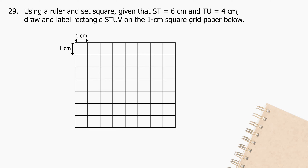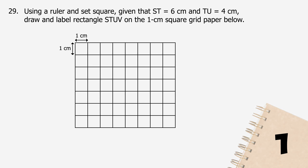Question 29: Using a ruler and set square, given that ST equals 6 cm and TU equals 4 cm, draw and label rectangle STUV on the 1 cm square grid paper below. The rectangle STUV is drawn and shown in red.